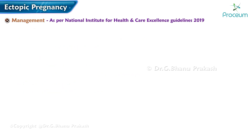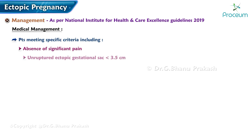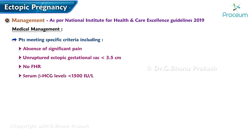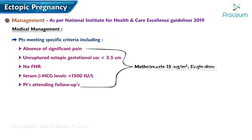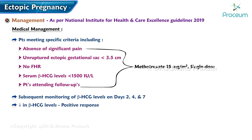Medical management is preferred in patients meeting specific criteria: absence of significant pain, unruptured ectopic gestational sac less than 3.5 cm with no fetal heart rate, serum beta-hCG below 1,500 IU/L, and ability to attend follow-up. These patients may be considered for a single dose of methotrexate 15 mg/m². Subsequent monitoring of beta-hCG on days 2, 4, and 7 is essential; a decrease indicates positive response. If the drop is less than 15 percent, therapy may be repeated for a maximum of three doses.